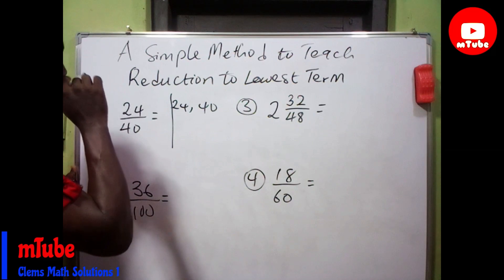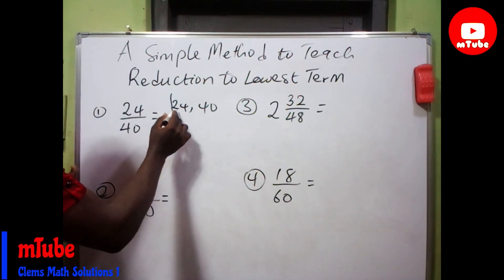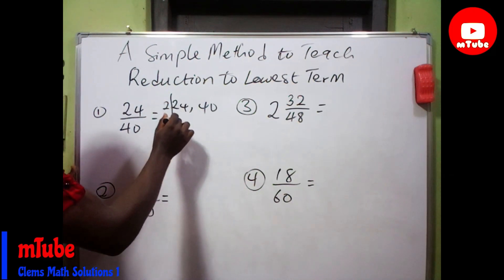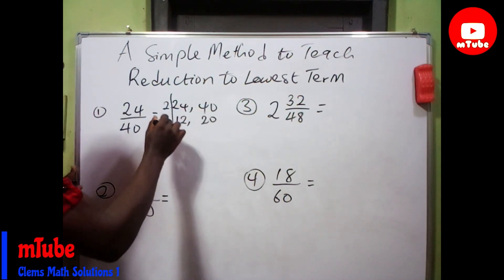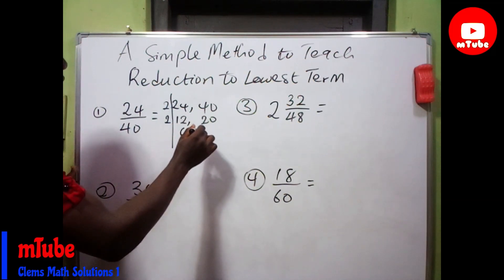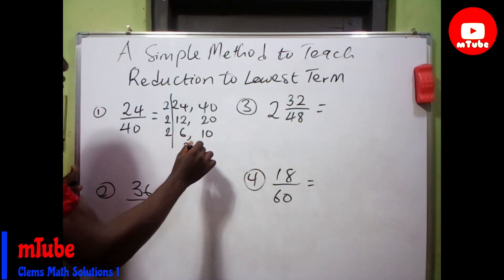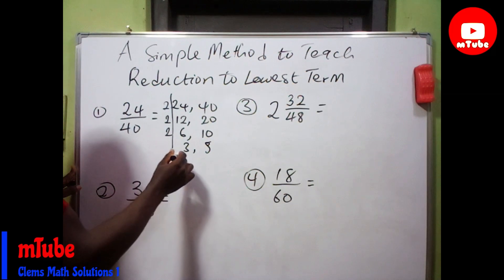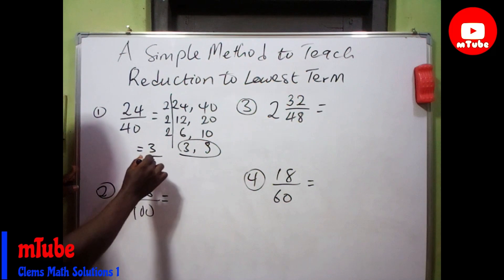They are finding the highest common factor (HCF) of 24 and 40. Starting with 2: 2 divides 24 to give 12, and divides 40 to give 20. Again, 2 divides 12 to give 6, and divides 20 to give 10. Again, 2 divides 6 to give 3, and divides 10 to give 5. So with this, they have been able to get the answer as 3 over 5.